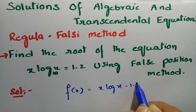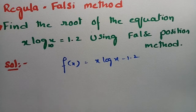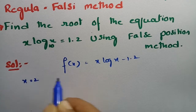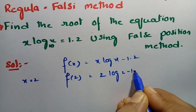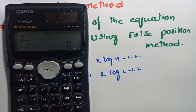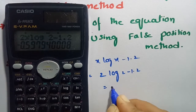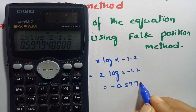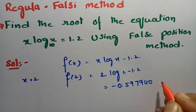Here it is given that f(x) = x·log(x) − 1.2. First of all, we have to check f(1), f(2), f(3), f(4), and so on. Going with x = 2: f(2) = 2·log(2) − 1.2, which gives a value of −0.597940. This is a negative value.